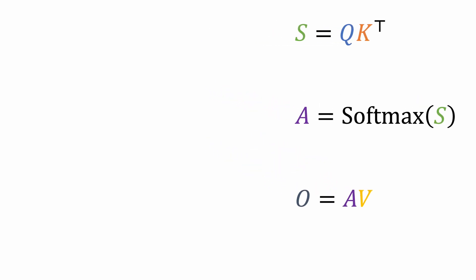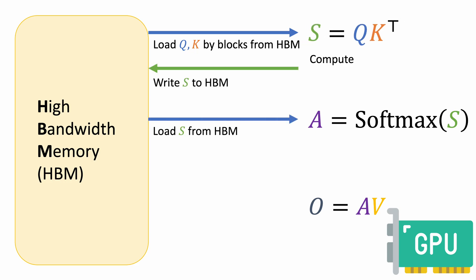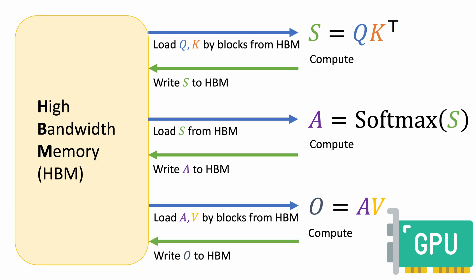To understand why it is slow, let's look at how this computation happens on a GPU. The query, key, and value matrices are stored in the high bandwidth memory, HBM, outside the GPU cores. We load the query and key matrix from HBM, compute the dot product, and save the result S back to HBM. Next, we load the matrix S from HBM, compute the row-wise softmax, and write the NxN attention matrix A back to HBM. Finally, we load the attention matrix A and the value matrix V from HBM, compute the weighted average, and write the output O to HBM.